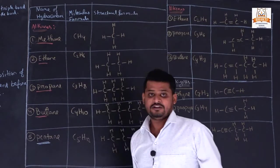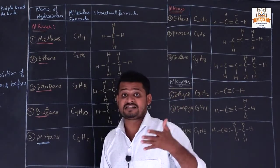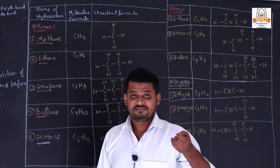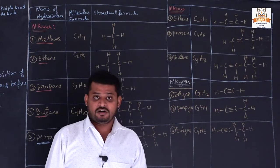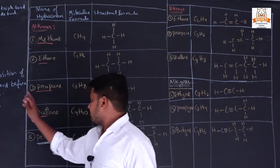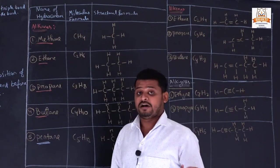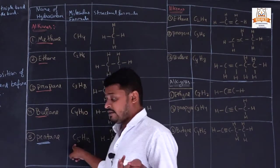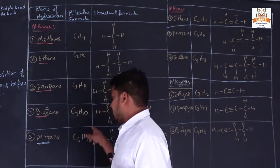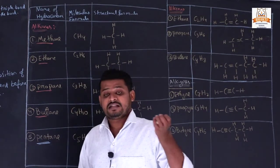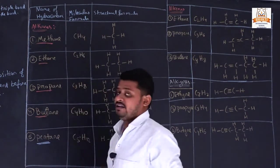We all know pentagon. If the number of carbon atoms is 6 then it is 'hex-', like hexagon. Number of atoms 5 is pentane, 6 is hexane, 7 is heptane. Like this we have to identify their names.